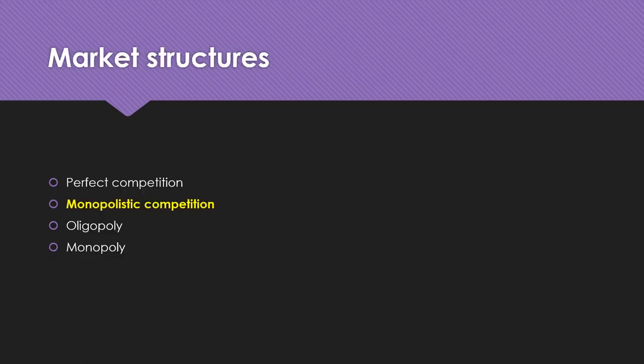There are four market structures. The first is perfect competition, which we talked about previously. Today we'll cover monopolistic competition, then move on to oligopoly and monopoly, which are less competitive. Those tend to have barriers to entry that we don't see in perfect competition and monopolistic competition.